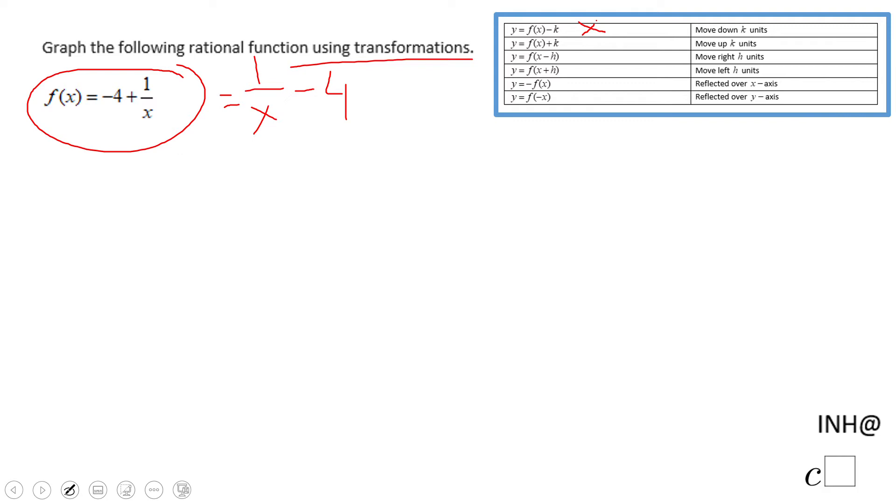original, the parent graph is 1 over x, this guy. And our f of x, this f of x is different than the other f of x. Let me be sure about that. It's minus k, which tells us that it moves down 4 units. So yeah, here I can say move down 4 units.